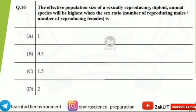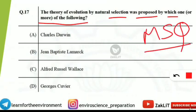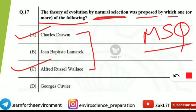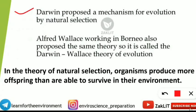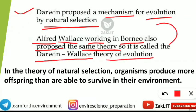The next question is an MSQ (multiple select): the theory of evolution by natural selection was proposed by which scientist(s)? The correct options are Charles Darwin and Alfred Russel Wallace. Both independently proposed the same theory — Wallace working in Borneo — so it is called the Darwin-Wallace theory of evolution by natural selection.